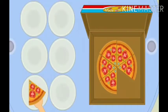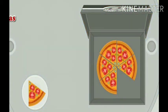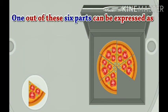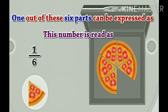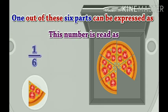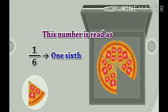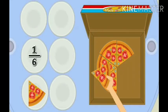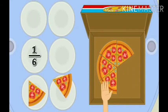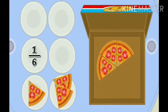He distributed one part into every plate. So this one part out of six parts can be expressed as one upon six. This number is read as 'one sixth.' He distributed one sixth part to every plate.